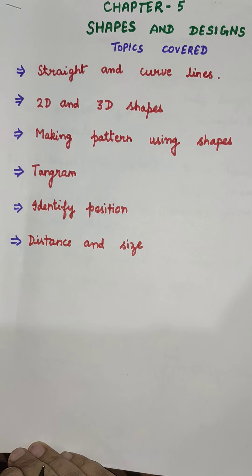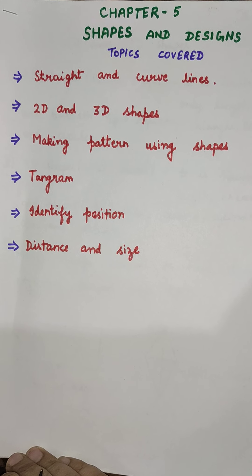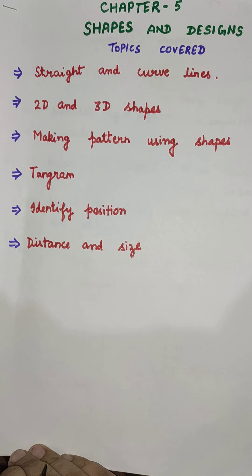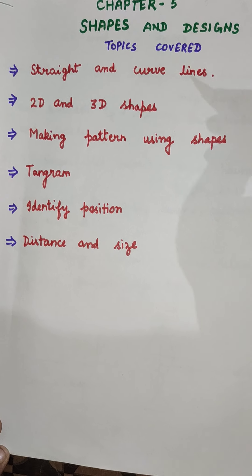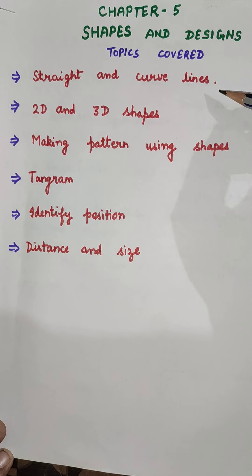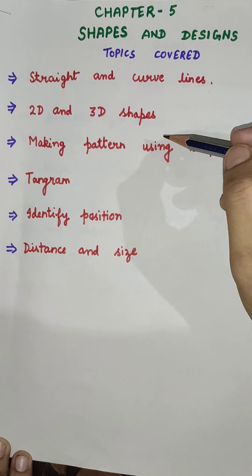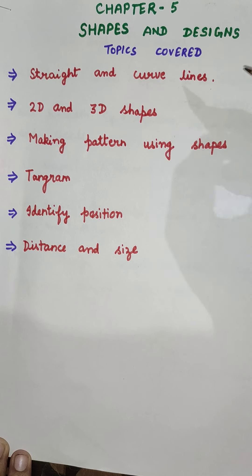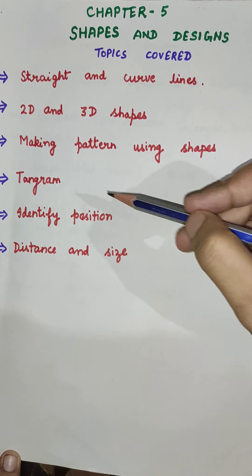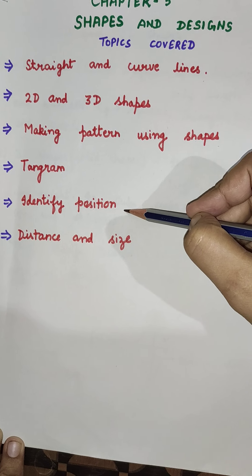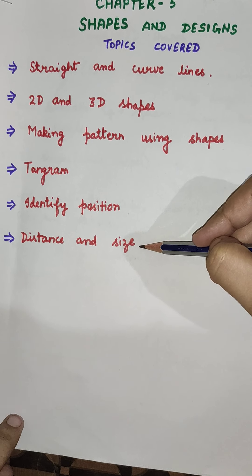And now, today we are going to do the new chapter of unit 2, that is chapter number 5, Shapes and Designs. We are going to cover the topics: Straight and Curve Lines, 2D and 3D Shapes, Making Pattern Using Shapes, Tangram, Identify Position, and Distance and Size.